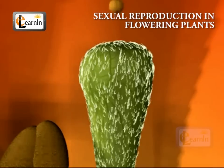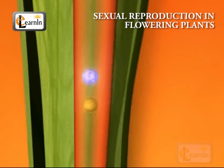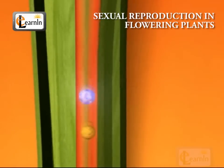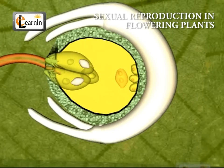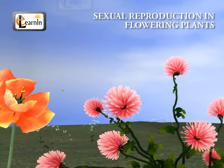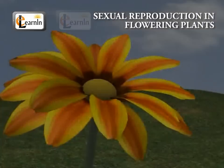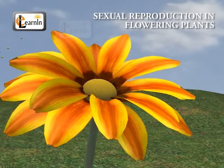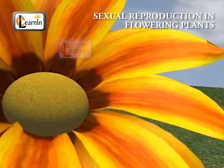The pollen needs to be transferred from the stamen to the stigma. If this transfer of pollen occurs in the same flower, it is referred to as self-pollination. On the other hand, if the pollen is transferred from one flower to another, it is known as cross-pollination. This transfer of pollen from one flower to another is achieved by agents like wind, water, or animals.